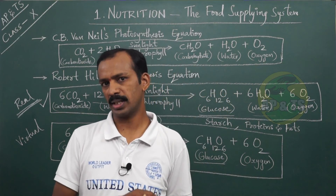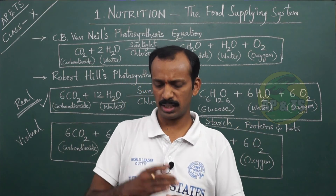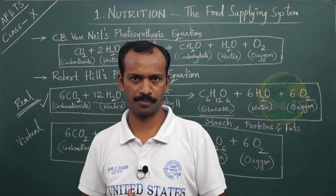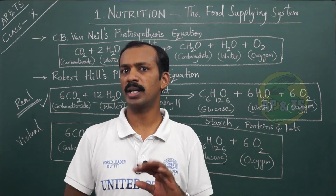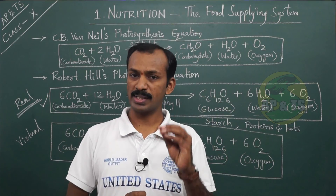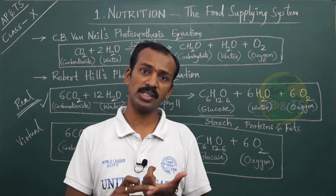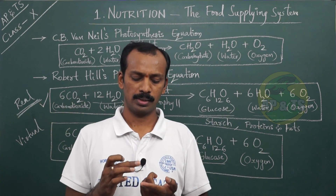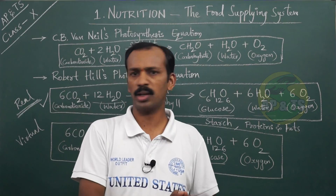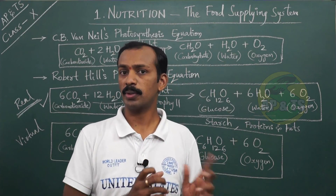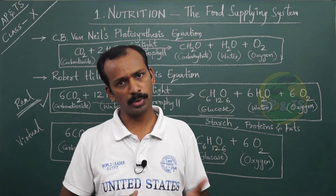Plants can produce proteins and fats by converting the starch or carbohydrates they produce. Animals, however, cannot produce carbohydrates — they can get carbohydrates only from plants. Animals can get fats and proteins from other animals as well. So the key point is: only plants can produce carbohydrates, while proteins and fats can be produced by both plants and animals.